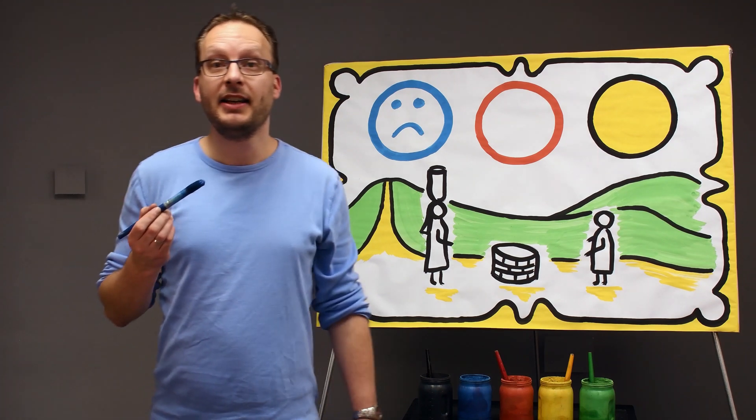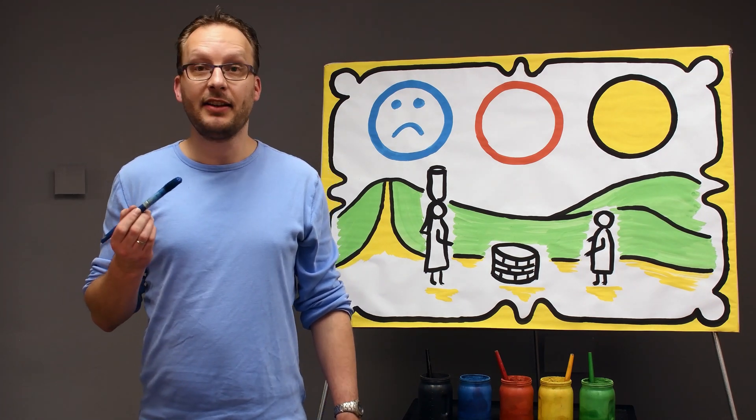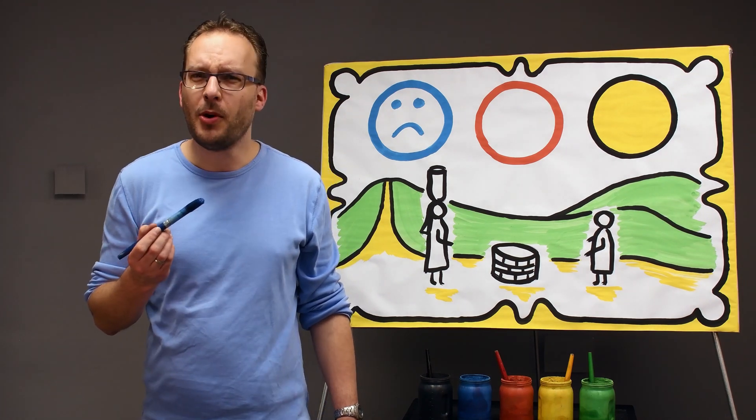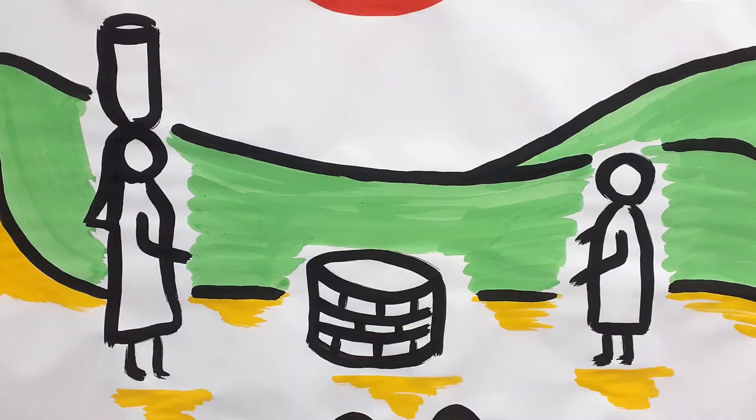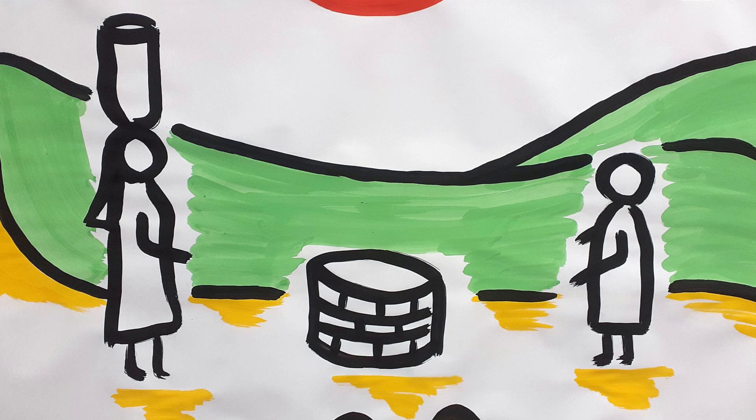When Jesus saw the woman, he asked her, Please give me a drink. The woman was very surprised that Jesus talked to her. She thought, Why is this man even talking to me? He is a Jew, and I am a Samaritan. People from our two countries hate each other. He shouldn't be talking to me.